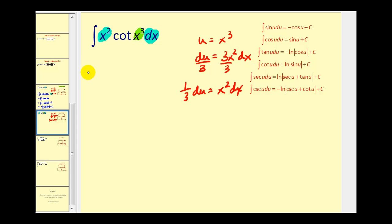So again this simplifies nicely. We're going to have (1/3) du, and then cot(x³) becomes cot u.